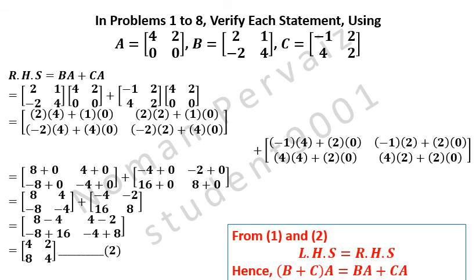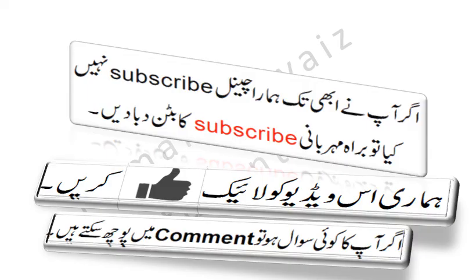Both answers are the same. From equation 1 and equation 2, left-hand side equals right-hand side. Hence (B + C)A = BA + CA. This is our answer. Please like this video and subscribe to our channel.